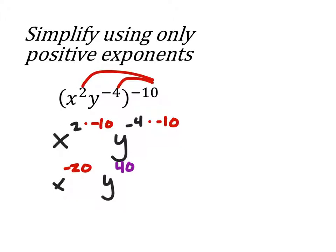So multiplying those gives us x to the power of negative 20 and y to the power of 40. So y to the power of 40 has a positive exponent already, but we're going to change this x to the power of negative 20, and what we'll do is we'll make this a fraction right here.